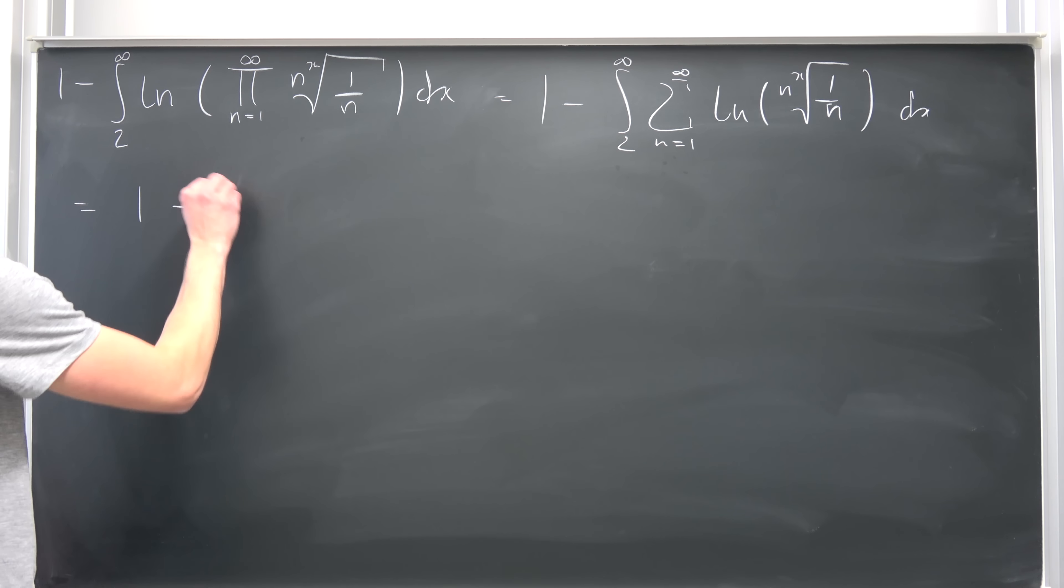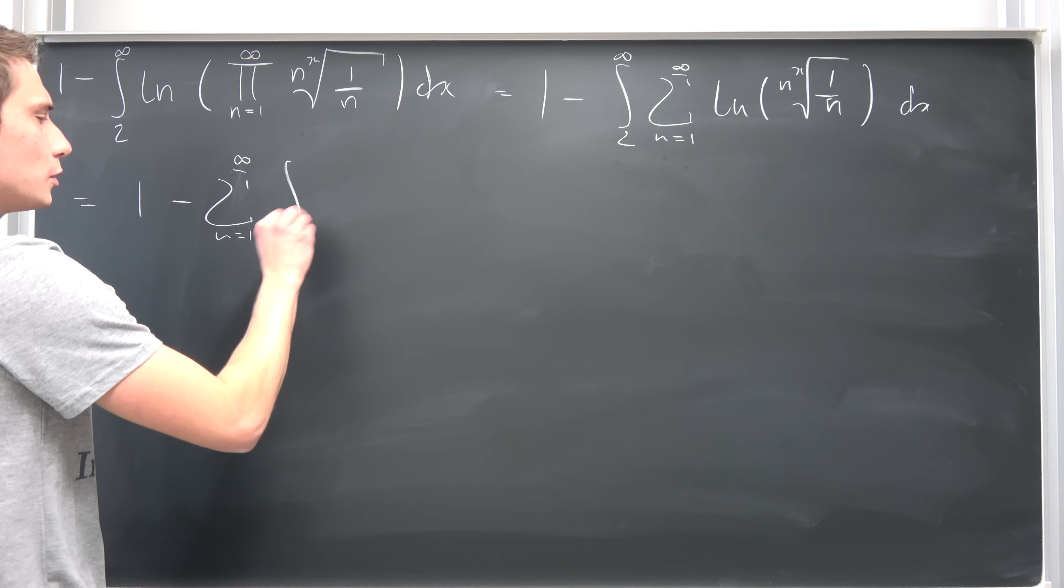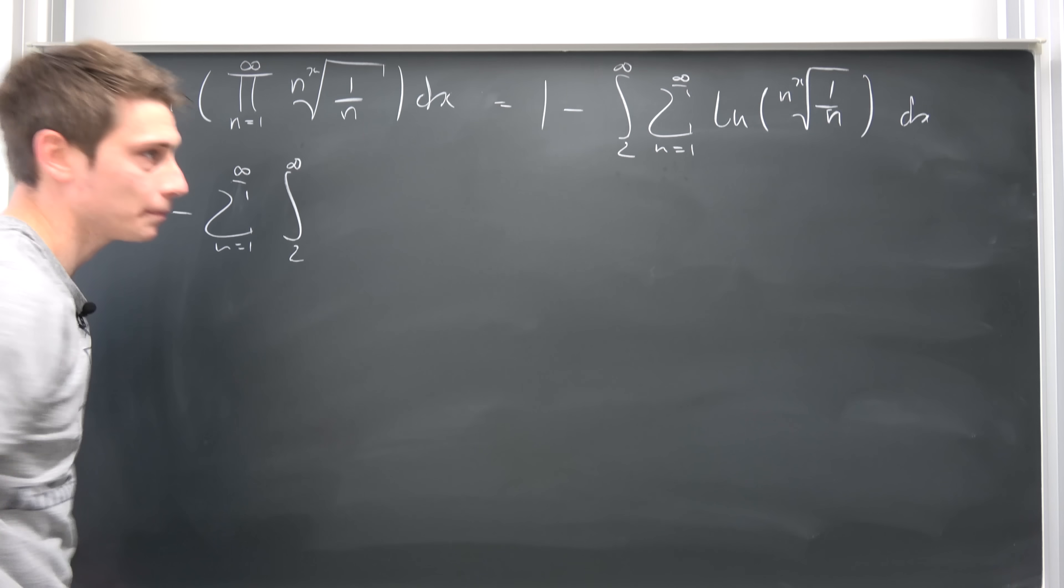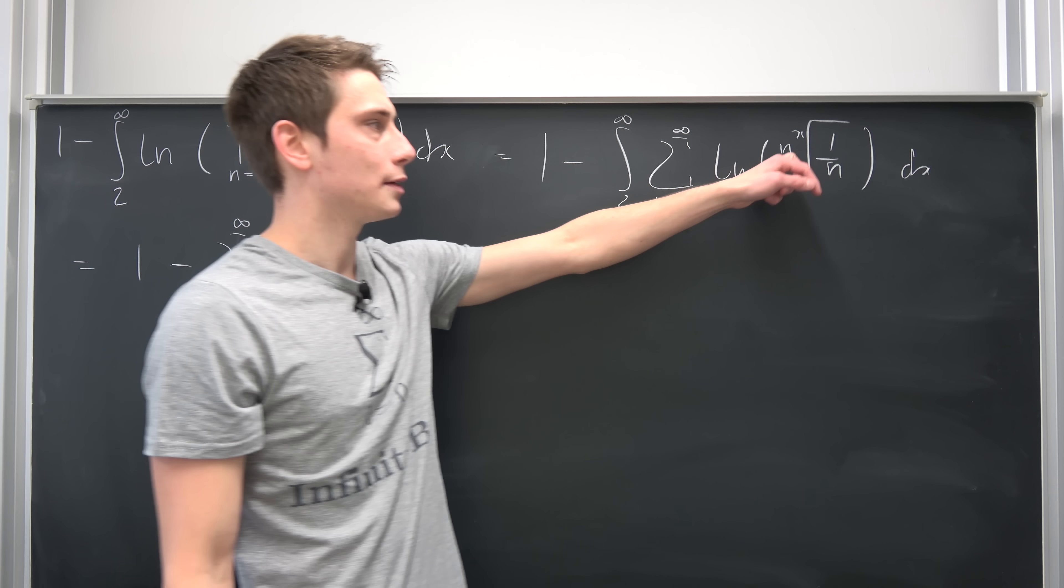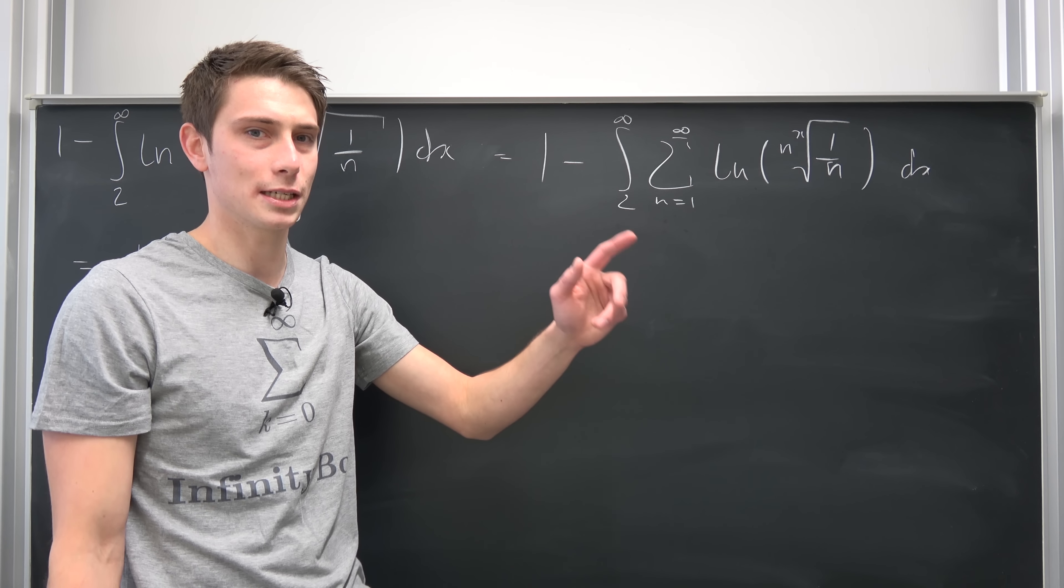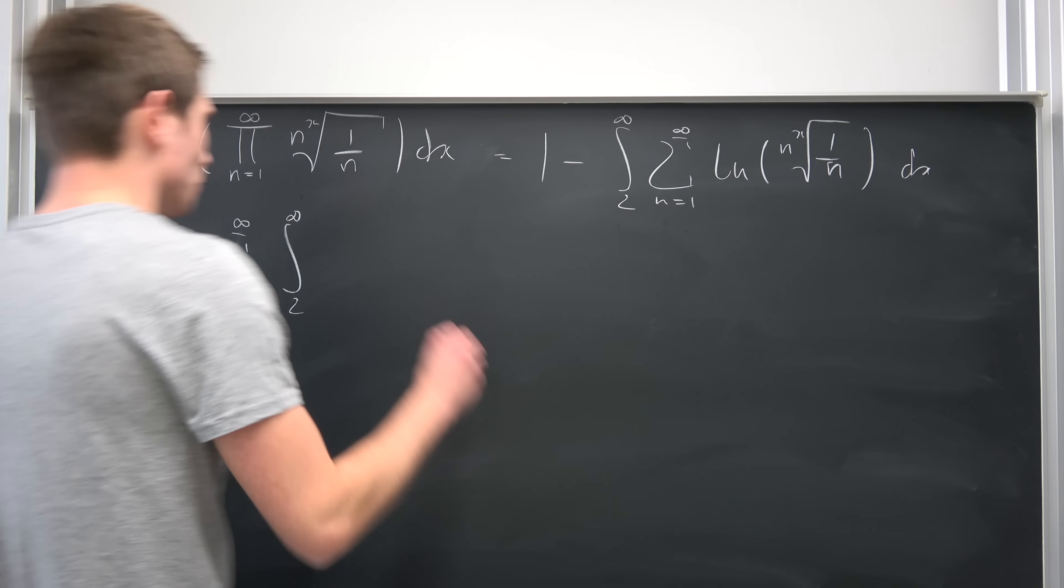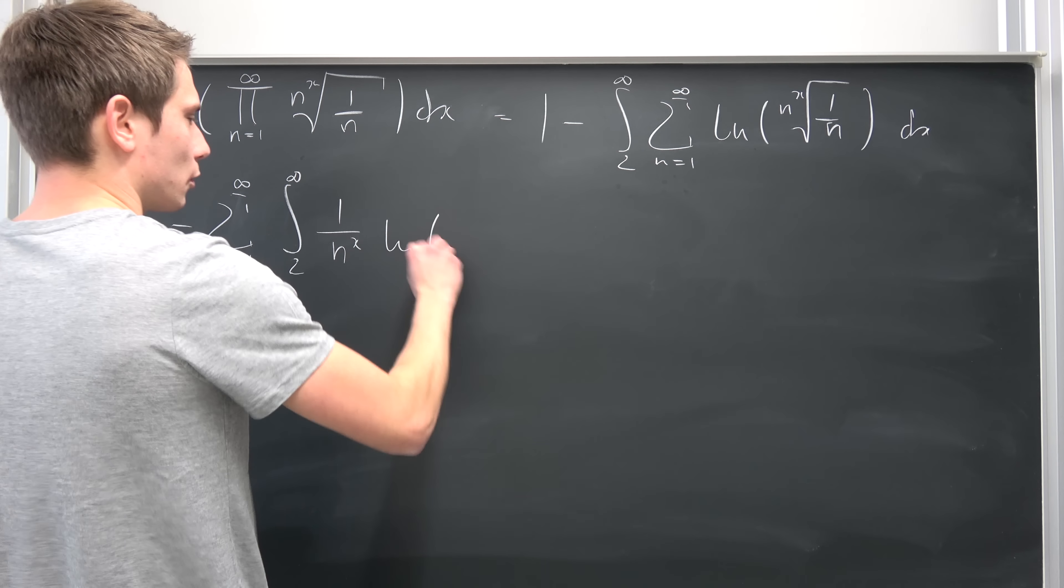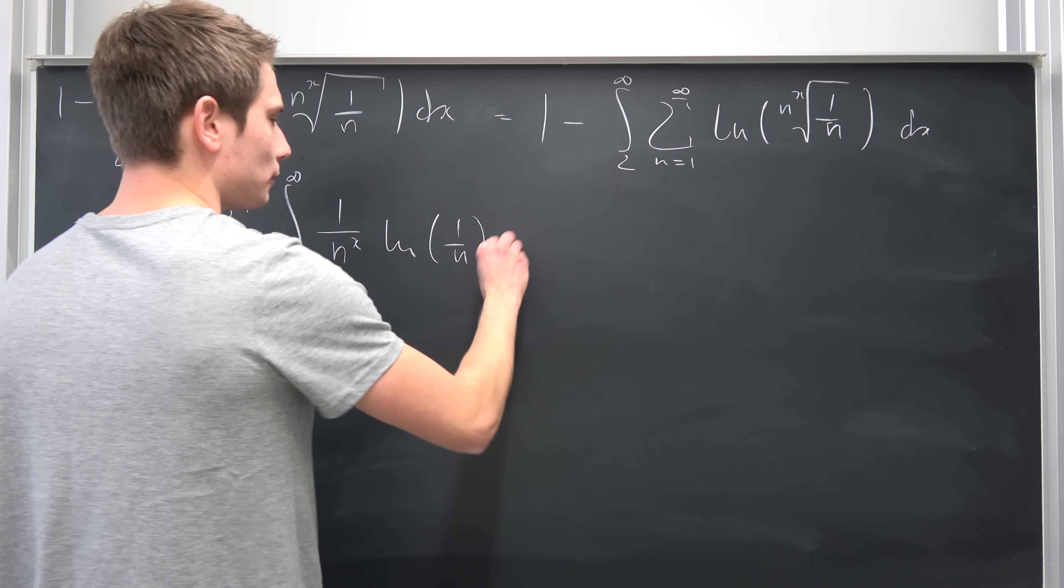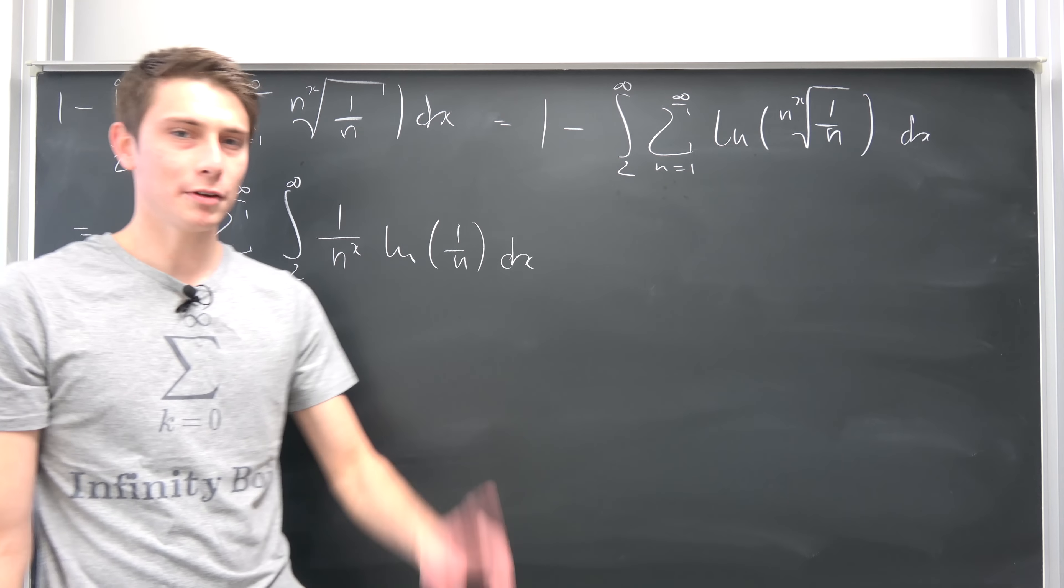So why not take this infinite summation to the outside, running from 1 to infinity, integral from 2 to infinity of... Now we can make use of natural log properties. So the n to the x root is nothing but 1 over n to the 1 over x power. So let's bring this to the outside, and then natural log of 1 over n, integrated with respect to x.